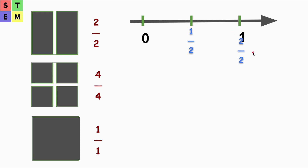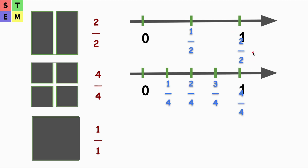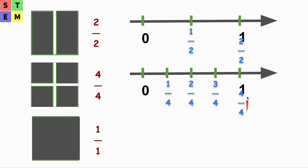In our second example, I've divided the number line into four equal pieces. So one, two, three, four. The first point is one fourth, then two fourths, then three fourths, and finally four fourths. Four fourths equals one, because we've marked all of the equal parts in gray.